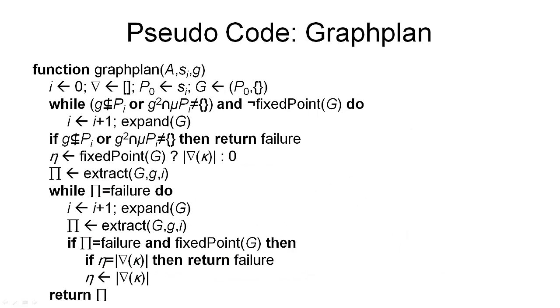Here is the function Graphplan that takes a propositional planning problem consisting of a set of actions, an initial state, and a goal description. The high level structure of this algorithm is as follows: we first expand the planning graph until we get to a graph that may contain a solution, and that's what happens here in this part. And then we try to extract the solution, which happens here and again in this loop.